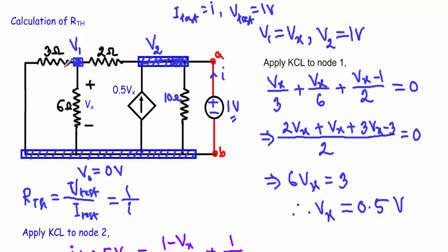Applying Kirchhoff's current law at node one in the test circuit — there is no current source, so all currents are outgoing. Current through the 3 ohm is V1/3, through the 6 ohm is V1/6, and through the 2 ohm is (V1 − V2)/2. Since V1 is the voltage across the 6 ohm, which equals Vx, solving gives Vx = 0.5 V.